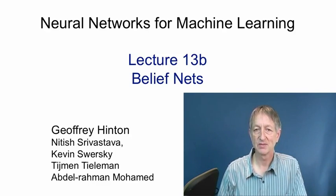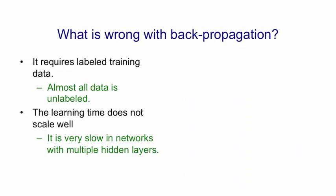And the issue then became, how can we learn sigmoid belief nets? A second problem is that for deep networks the learning time does not scale well. When there are multiple hidden layers, the learning was very slow. We now know that one of the reasons was we did not initialise the weights in a sensible way.